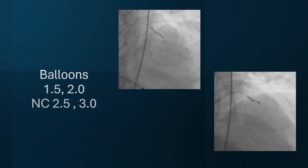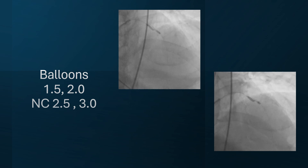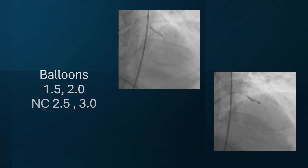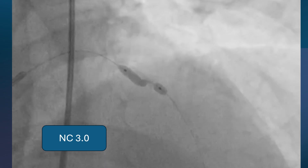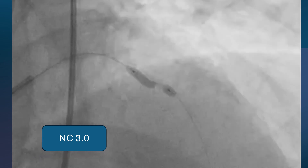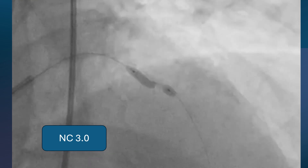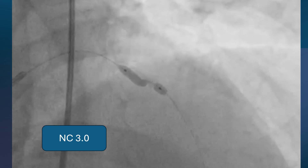The lesion was crossable by ordinary balloon and NC balloons, but as you can see, they couldn't dilate it even with very high pressure. Here we can see the 3.0 NC balloon almost split into two parts with failure to dilate the lesion.